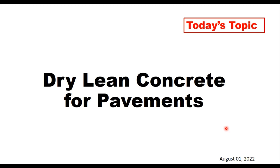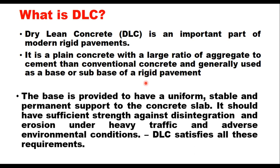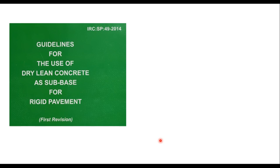Today we will discuss dry lean concrete for concrete pavements. Dry lean concrete is an important part of modern rigid pavements. It is a plain concrete with a large ratio of aggregate to cement than conventional concrete, and generally it is used as a base or sub-base of a rigid pavement. The base is provided to have a uniform, stable, and permanent support to the concrete slab, and it should have sufficient strength against disintegration and erosion under heavy traffic and adverse environmental conditions. DLC satisfies all these requirements.